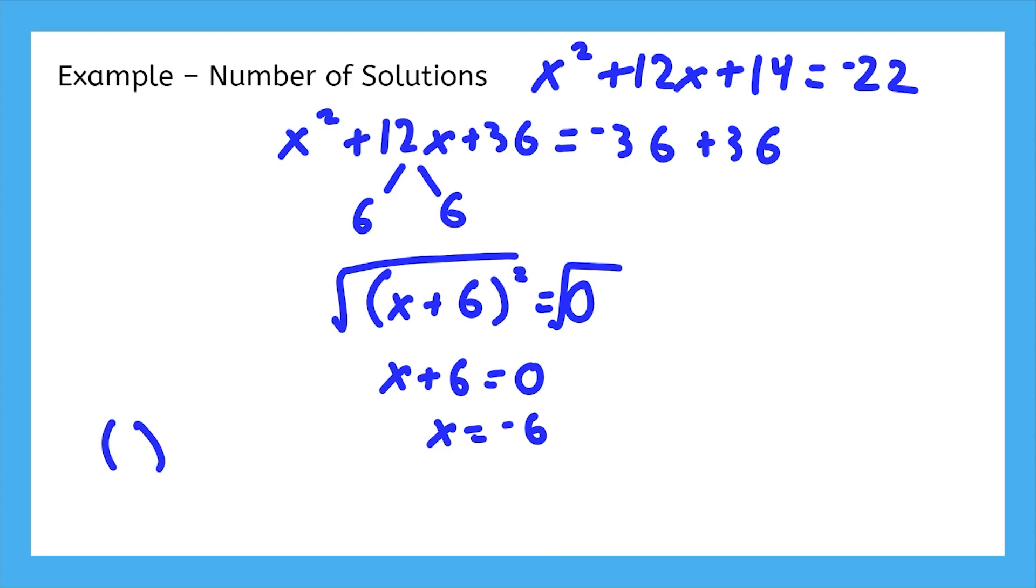In the last video, we only saw positive values on the right side after completing the square, and there were always two solutions. And we just saw that if you complete the square and the right side is 0, there will only be one solution.